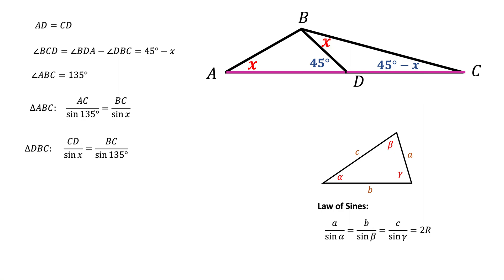That should be the same as BC divided by sine of this angle BDC, and that angle is 180 minus this 45 which is 135 degrees.